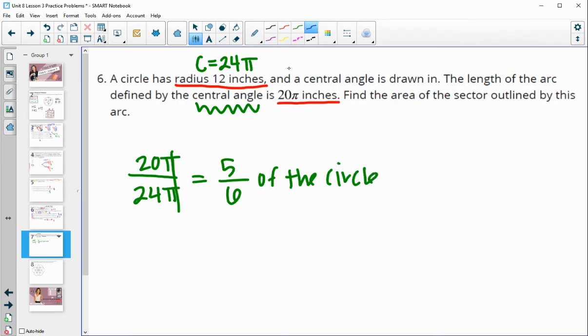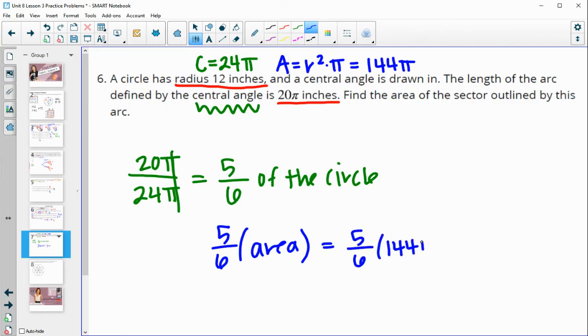So then we would have the same amount for the area. We would have 5 sixths of our area. So we need the area of the circle, which is doing the radius squared times pi. And 12 squared is 144. So we have 144 pi for that area. So we would do 5 sixths of 144 pi. And so multiply 144 times 5 divided by 6 gives us 120 pi inches squared for our sector area.